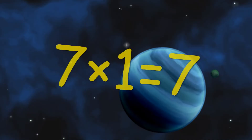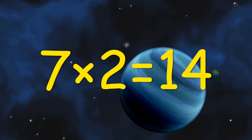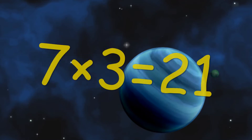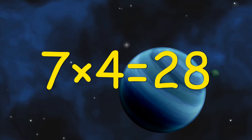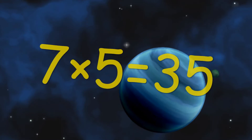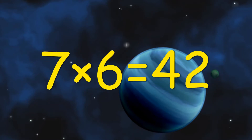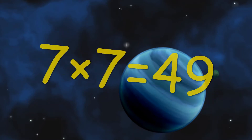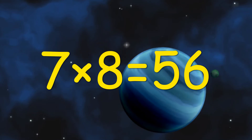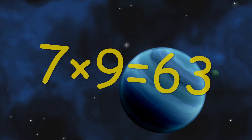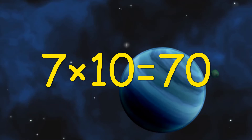Seven one's a seven, seven two's a fourteen, seven three's a twenty-one, seven four's a twenty-eight, seven five's a thirty-five, seven six's a forty-two, seven seven's a forty-nine, seven eight's a fifty-six, seven nine's a sixty-three, seven ten's a seventy.